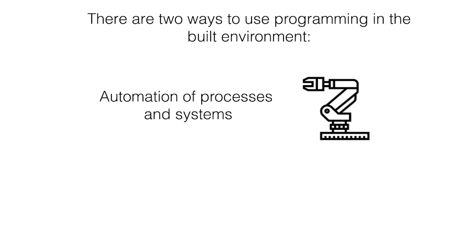There are two ways to use programming in the built environment. The first is to use scripts or programs to automate a process or system. For example, in digital fabrication, you might have robots that respond to a Python script that tells them how to assemble or fabricate something in an automated way.